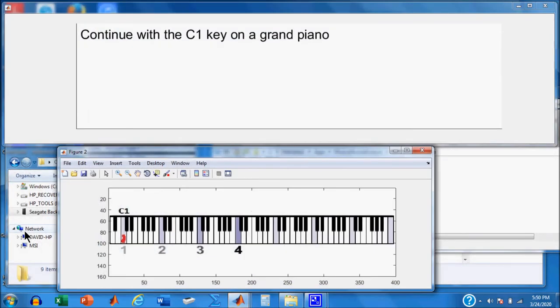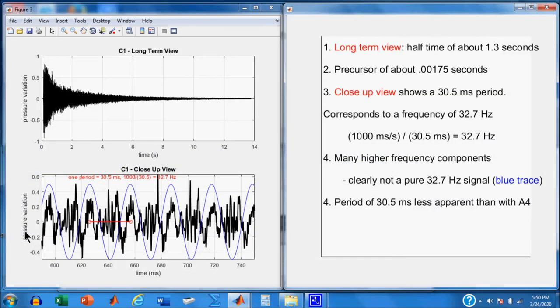Okay, let's go on to the next key, which is at the other end, or down at the left end of the piano. C1. Here we go. Okay, here's the long-term view. It has a halftime of about 1.3 seconds. As it starts out, it goes down about here. That's halftime, the time it takes to get half of its power.